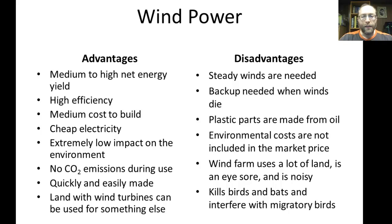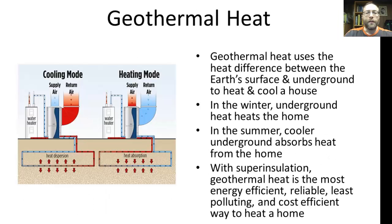Disadvantages to wind power: steady winds are needed — you need at least an average of 12 mph winds for a home turbine to be usable. Backups are needed when winds die, similar to solar at nighttime, usually using batteries. Plastic parts are made from oil, producing CO2 emissions in manufacturing, and these environmental costs are not included in the market price. Wind farms use a lot of land, and turbines are an eyesore and noisy. They do kill birds and bats and interfere with migratory birds.